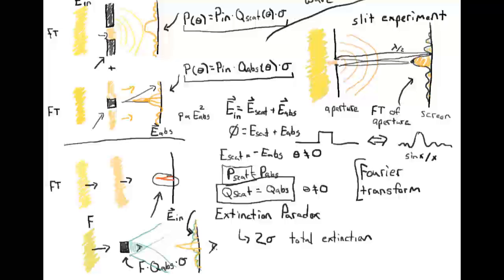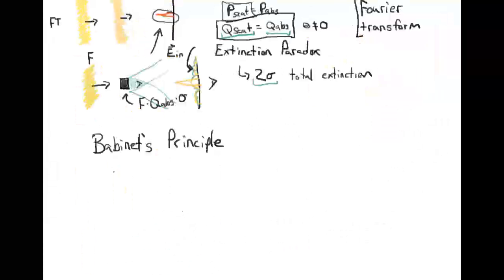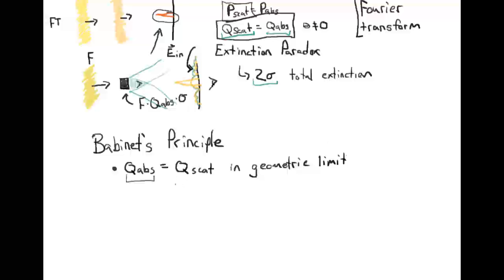What we're missing from looking straight behind this object is twice as much light as you'd expect — once from the direct absorption, and once from the diffractive scattering around the edges of the object. The major upshot of Babinet's principle is that the absorption efficiency equals the scattering efficiency in the geometric limit, which we define as when 2π times the radius of the particle is significantly bigger than the wavelength of the light.